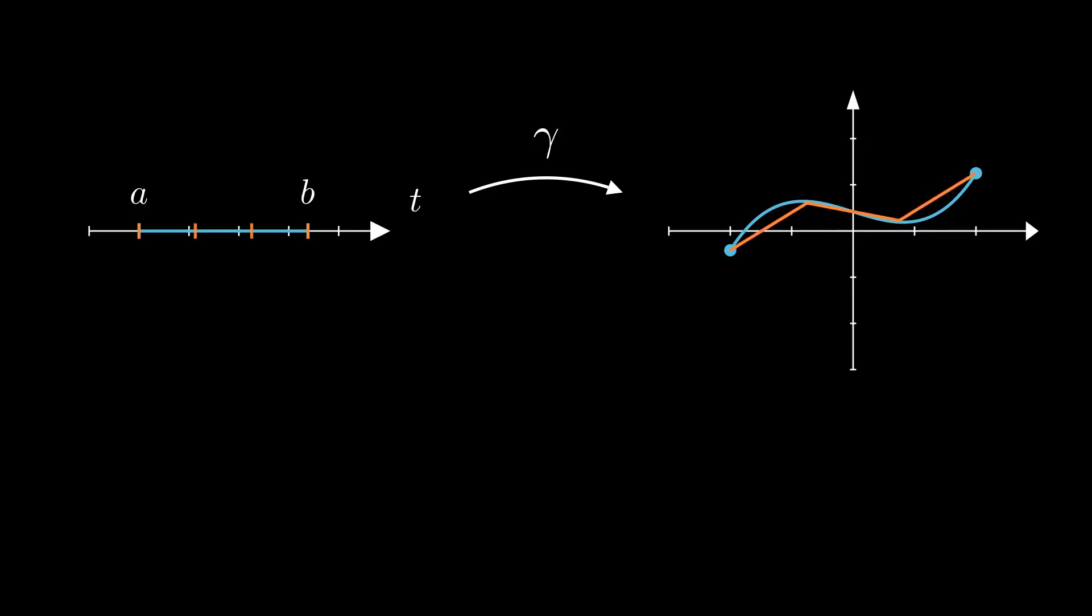Each partition of the domain of a curve gives us a finite number of points in the curve, which in turn give us a broken line inscribed in our curve. As the partition becomes finer and finer, these broken lines approximate the curve more and more.